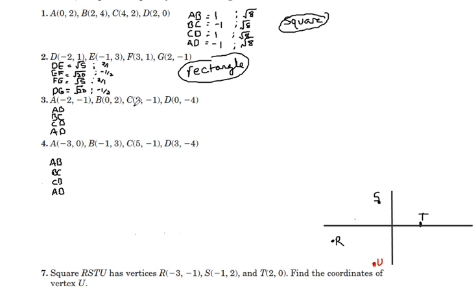Okay, for number 3, we're going to do our distance. Distance for AB is square root of 13. Distance for BC is square root of 13. Distance for CD is square root of 13. Distance for AD is square root of 13.